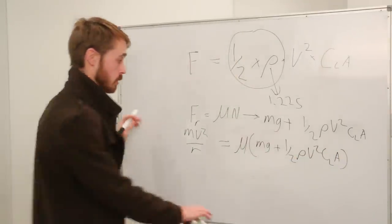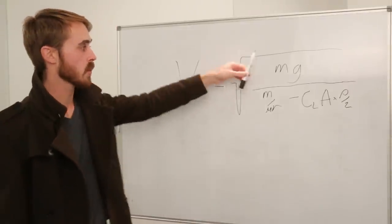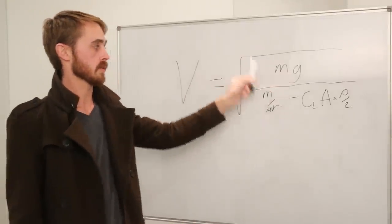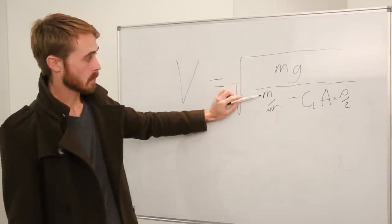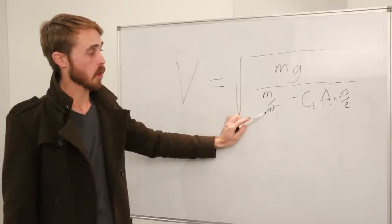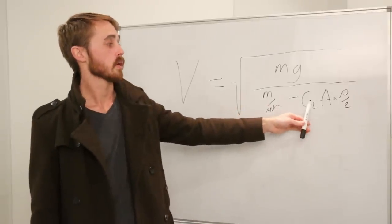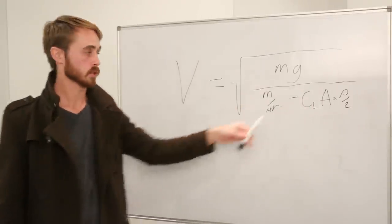So from this we can see that the velocity equals the square root of your mass times gravity which is your weight divided by your mass over your coefficient of friction times your radius minus your effective downforce term.